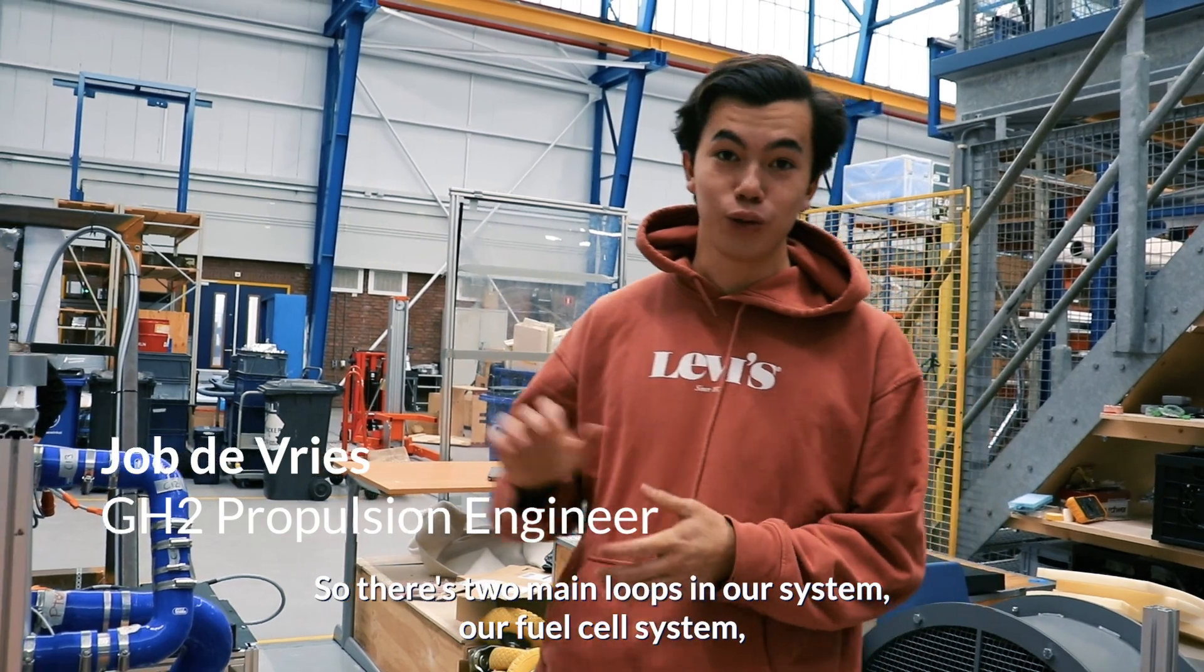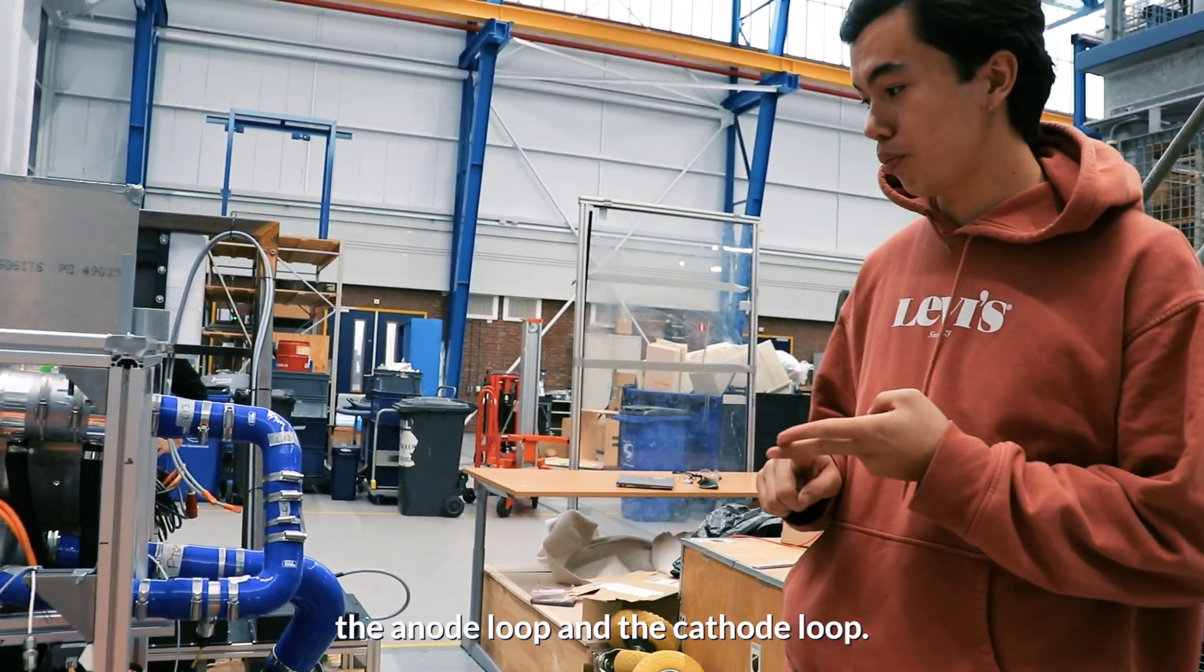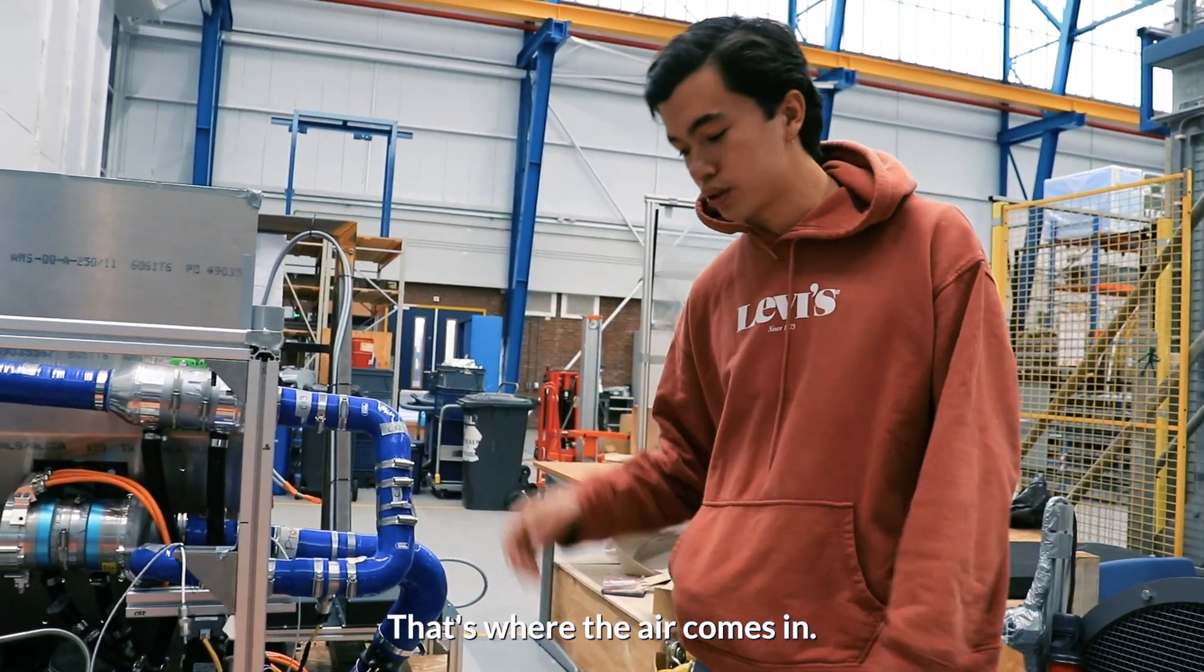Alright, so there's two main loops in our fuel cell system: the anode loop and the cathode loop. I'll first explain the cathode loop, that's where the air comes in.